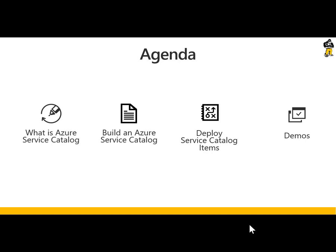Today's session has a pretty light agenda, but I still hope you enjoy it. I'm going to start with explaining what Azure Service Catalog is, followed by walking you through the different steps it takes to actually build an Azure Service Catalog, followed by sharing insights on how the Azure Service Catalog items can be deployed, and wrapping up the session by going through an end-to-end demo showing the different steps and really deploying the Service Catalog item.